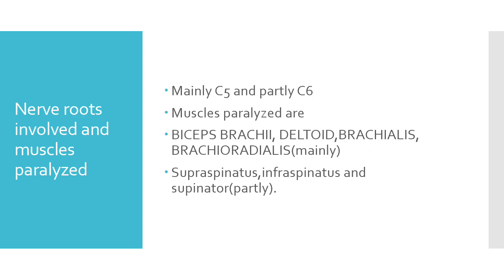The muscles that are paralyzed mainly include biceps, brachialis, deltoid, and brachioradialis — easy to remember as three 'B' muscles and one 'D'. Partially affected muscles include supraspinatus, infraspinatus, and supinator. So these are the main and partial muscles involved in Erb's paralysis.